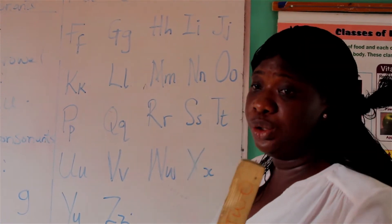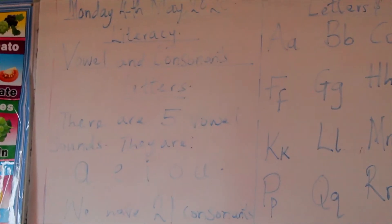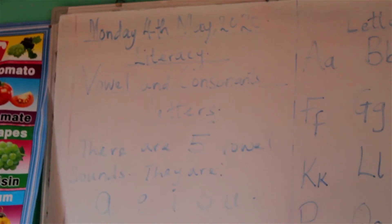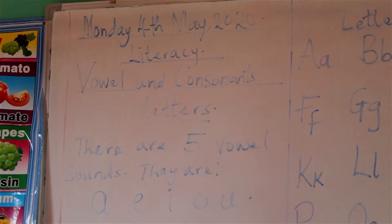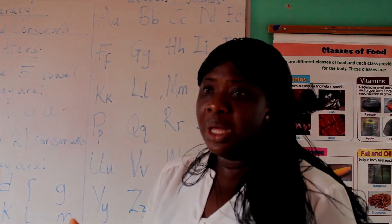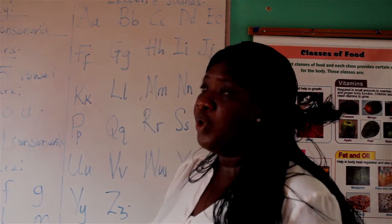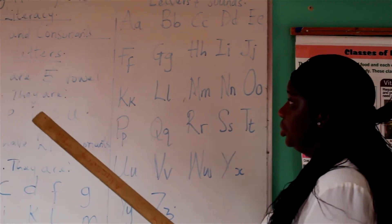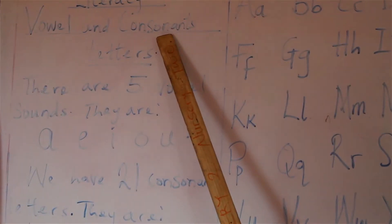So today we are going to another topic. I told you last week that we have 26 letters of the alphabet, and I told you that we have them in A, B, C, D form and also in letters. So today now we are going to the vowels and the consonants, still under the letters of the alphabet.